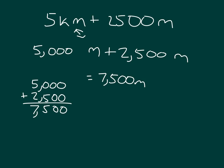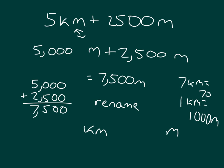In some instances, they might ask me to rename this into kilometers and meters. How many kilometers is there here? Well, let's count. Remember that 1 kilometer does equal 1,000 meters, so that 7 kilometers equals 7,000 meters. So I at least have 7 kilometers, and then what am I left with? I'm left with 500. So 5 kilometers plus 2,500 meters is equal to 7 kilometers, 500 meters.